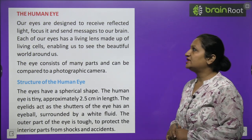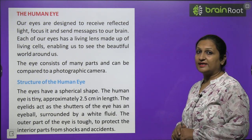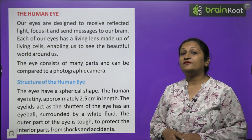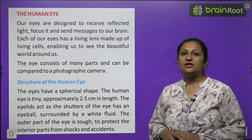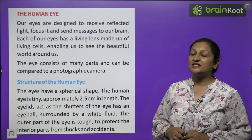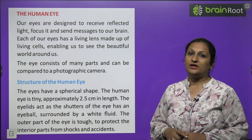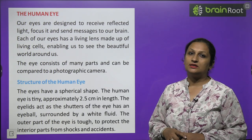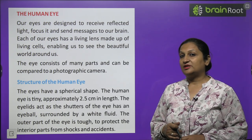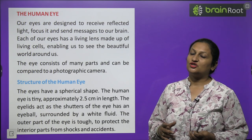The human eye: our eyes are designed to receive reflected light, focus it, and send messages to our brain. Inside the eye there is a convex lens — a converging lens. The light entering our eyes is converged by this lens to a point inside the eye called the retina. Then the optic nerve carries the signal as an electrical impulse to the brain. The brain reads it and sends a signal back via the optic nerve so that our eyes can see the object.